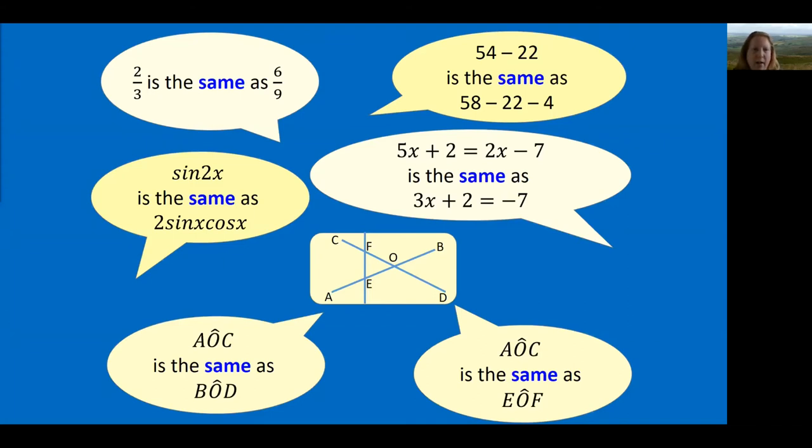Here's another situation. I invite you to take some time to think about each of these statements and what we mean by 'same' in each context. So 2 thirds is the same as 6 ninths. 54 take away 22 is the same as 58 take away 22 take away 4. Sin 2x is the same as 2 sin x cos x. 5x plus 2 equals 2x minus 7 is the same as 3x plus 2 equals minus 7. And then for this diagram, angle AOC is the same as angle BOD. But in what case is angle AOC the same as EOF? In both those situations, we've used the word 'same', but is that sameness the same?